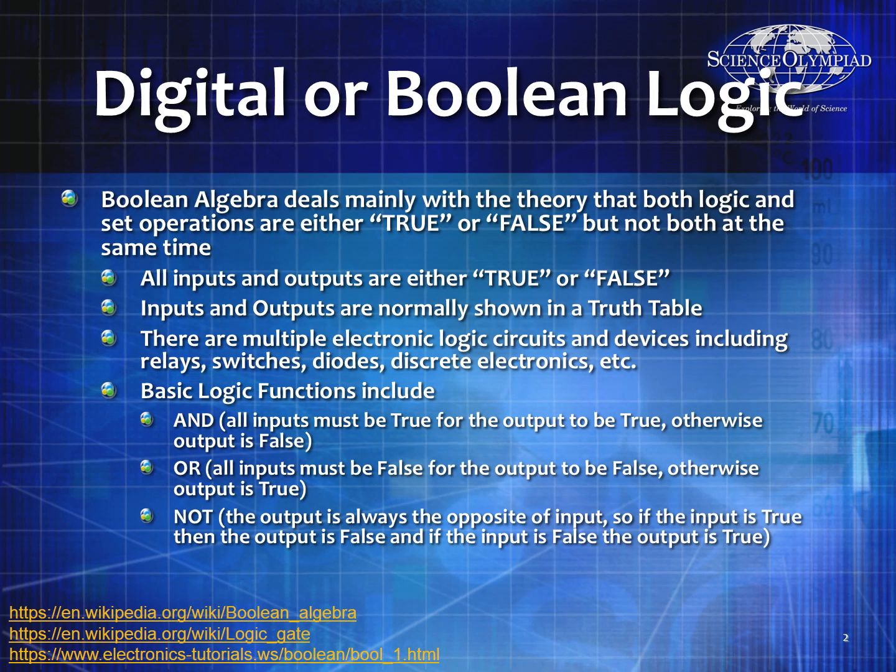Digital or Boolean logic. Boolean algebra deals mainly with the theory that both logic and set operators are either true or false, sometimes zero or one. All inputs and outputs will either be true or false — hence the reason why they can sometimes refer to it as binary. Inputs and outputs are normally shown in a truth table so you can see the direct correlation.